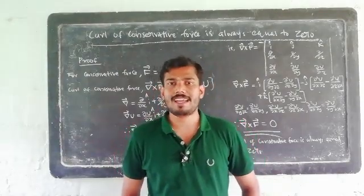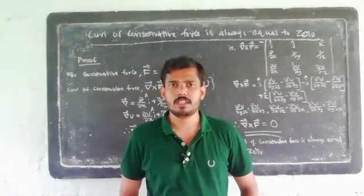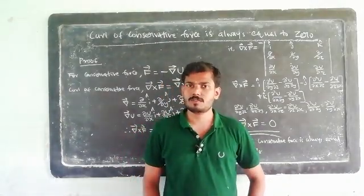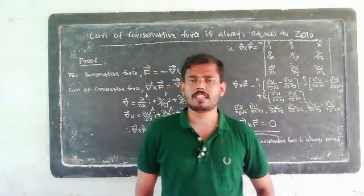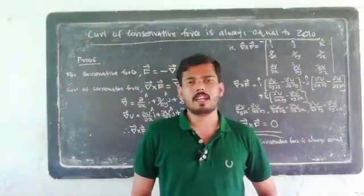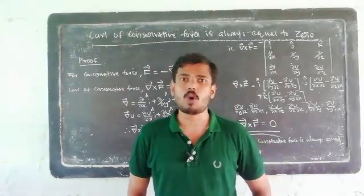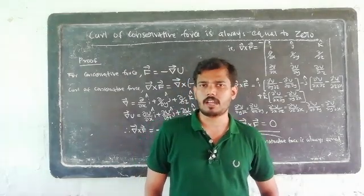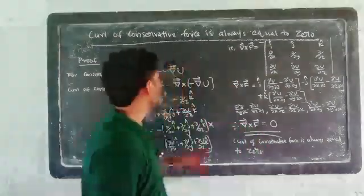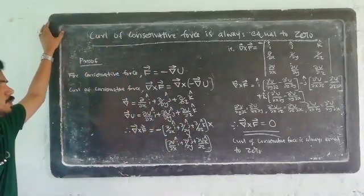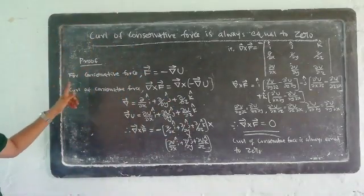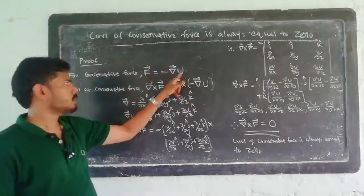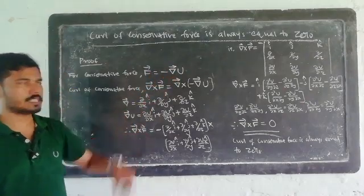What is a vector curl? The curl of vector A is del cross A; the curl of vector B is del cross B. Conservative force is the vector F, so the curl is del cross F, and that equals zero. The curl of conservative force equals zero — that is what we have to prove. For conservative force, F equals negative gradient of potential energy, F equals minus del U.